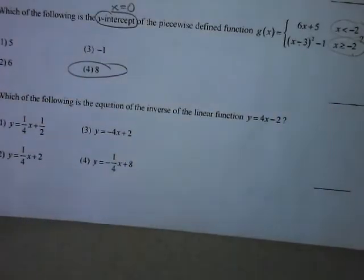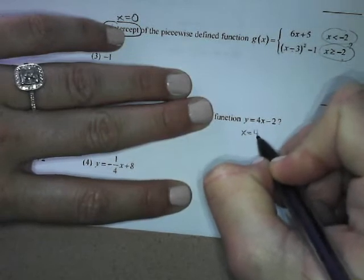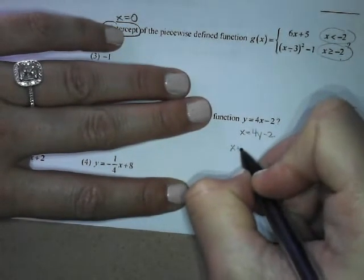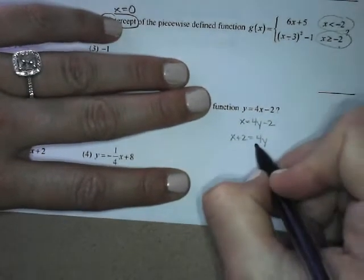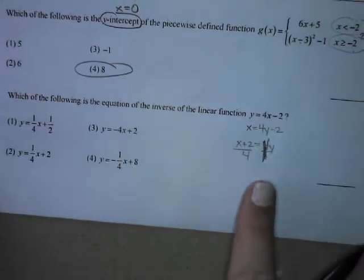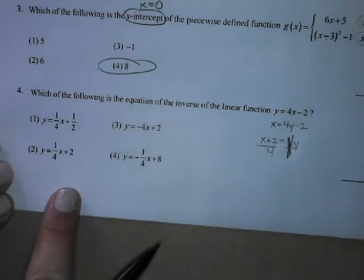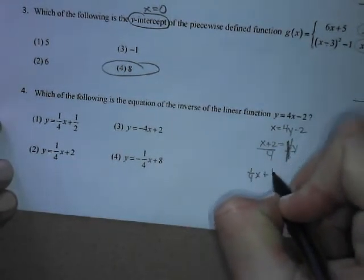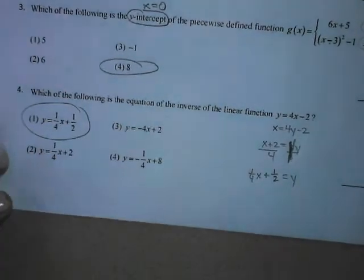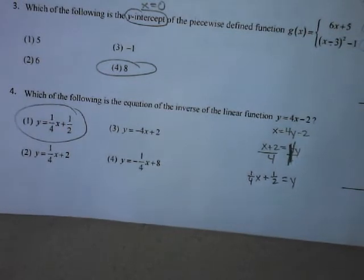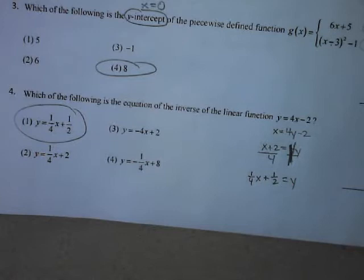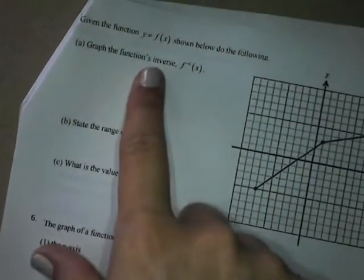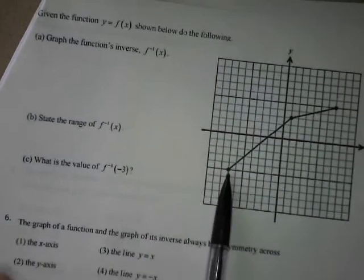Equation of the inverse: flip the x's and y's. Instead of y = 4x − 2, we have x = 4y − 2. Adding 2: x + 2 = 4y. Dividing by 4: y = (x + 2)/4 = (1/4)x + 1/2. That's option 1. Writing linear inverses is the easiest. The whole concept is switching x and y and solving for y.